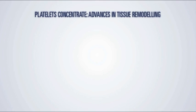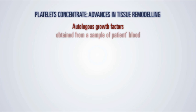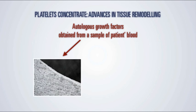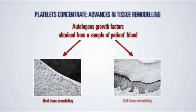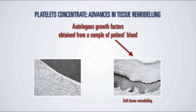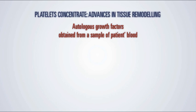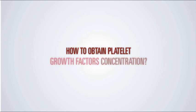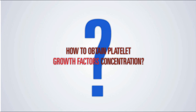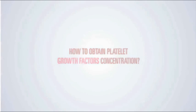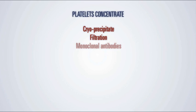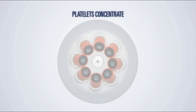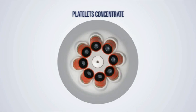Platelet concentrate represents an autologous source of growth factors obtained from a patient's blood sample, with interesting clinical potentiality for hard and soft tissue remodeling. Among the different methods employed to obtain platelet concentrations — cryoprecipitate, filtration, monoclonal antibody, mixed technique, and centrifugation — centrifugation represents an easy, economic, and reproducible technique.